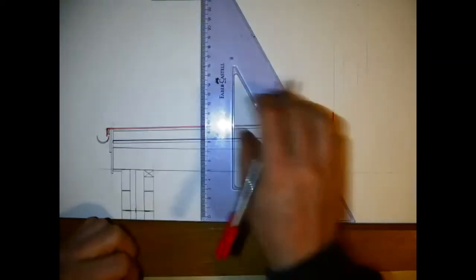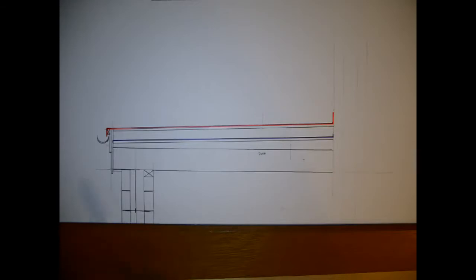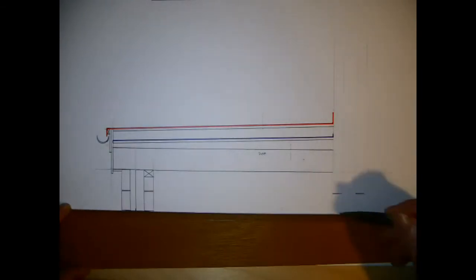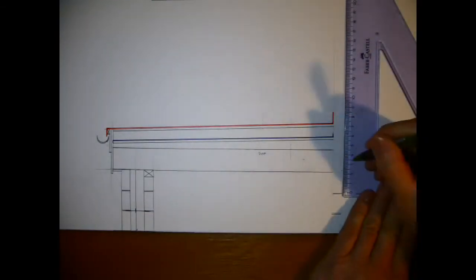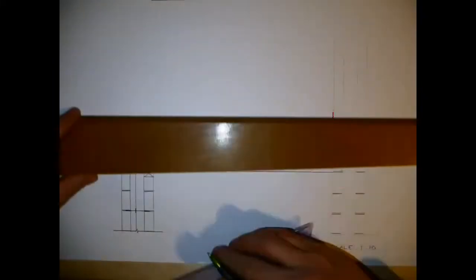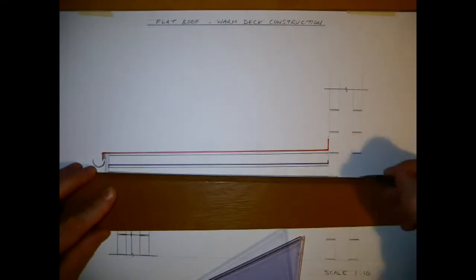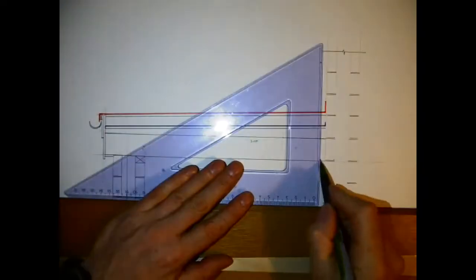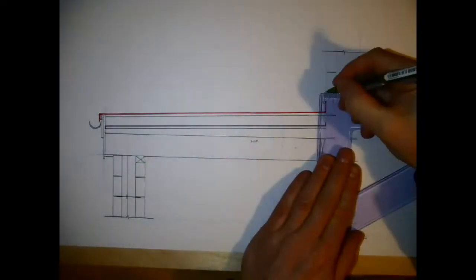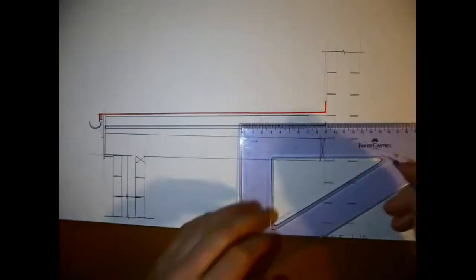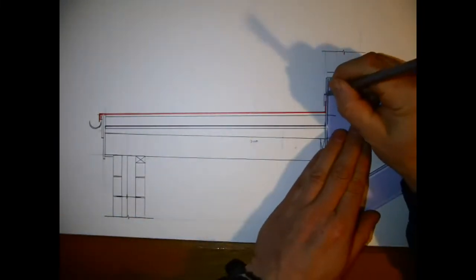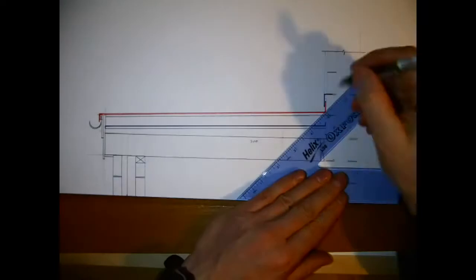I've drawn the right angle which I shouldn't have because the roof covering would perish at the corner, so there should be a fillet put in there. I'll change that in a few minutes. The only major problem with warm deck construction is the depth of the roof itself, especially for repairs of old buildings.